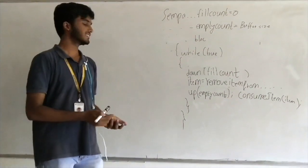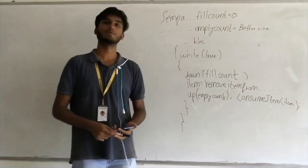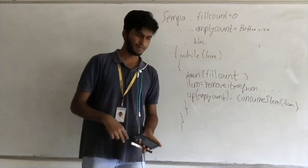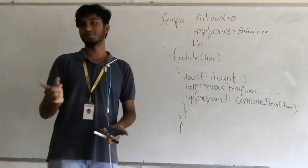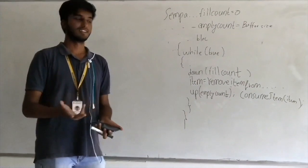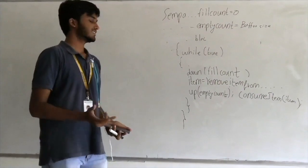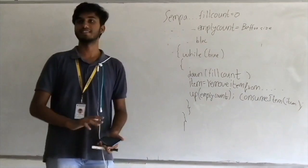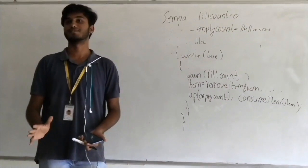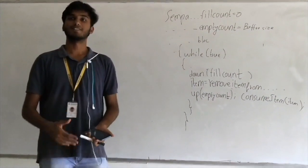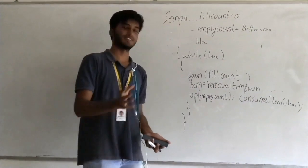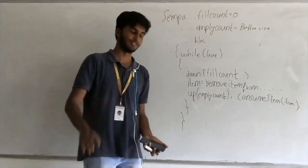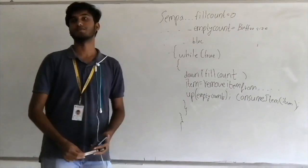The code described works when we have one producer and one consumer. When we have more than one producer and consumer, we have other processes that take care of it. Beyond this simple case we can have four producers, four consumers, ten producers, ten consumers, multiple buffers, and so on.